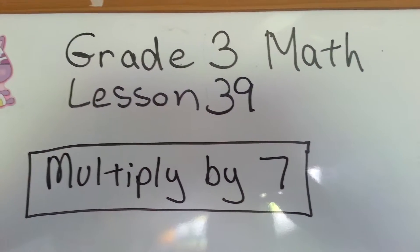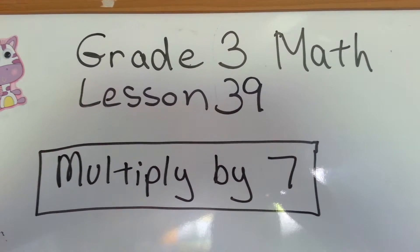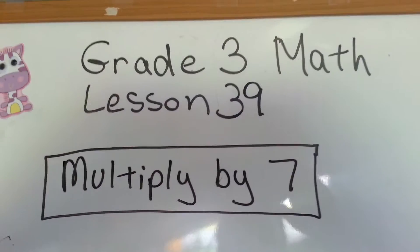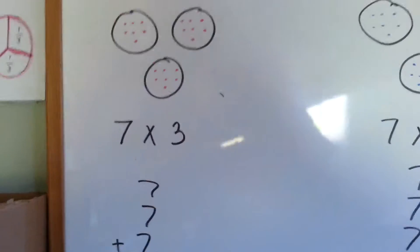Grade 3 math lesson 39: multiply by 7. We're going to multiply by 7.